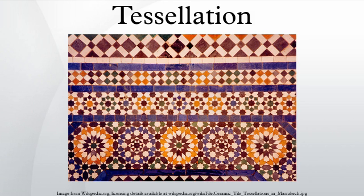Historically, tessellations were used in ancient Rome and in Islamic art such as in the decorative tiling of the Alhambra Palace. In the 20th century, the work of M. C. Escher often made use of tessellations for artistic effect.